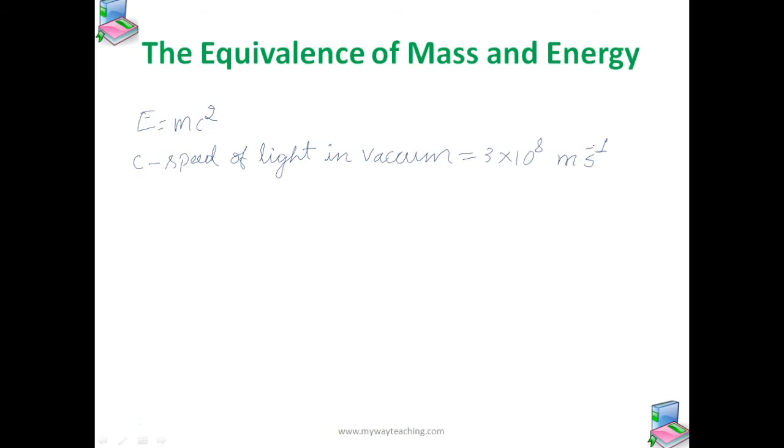Thus an amount of energy is associated with a mere kilogram of matter. That is E is equal to 1 into 3 into 10 raised to 8 whole square, which is equal to 9 into 10 raised to 16 joules energy associated with a kilogram of matter. That is equivalent to an annual electrical output of a large power generating station.